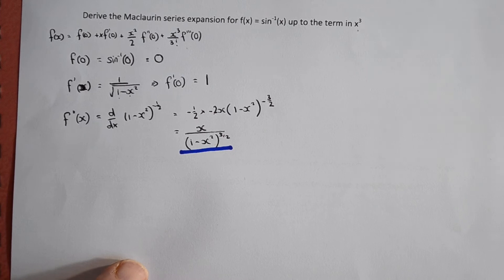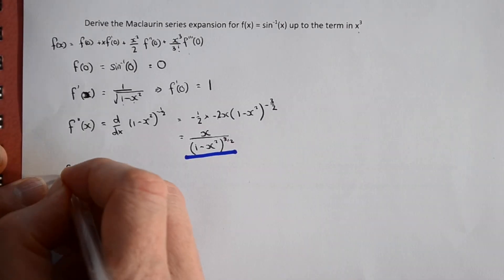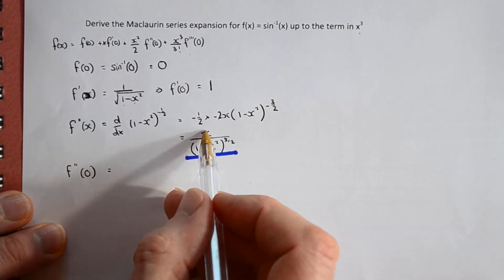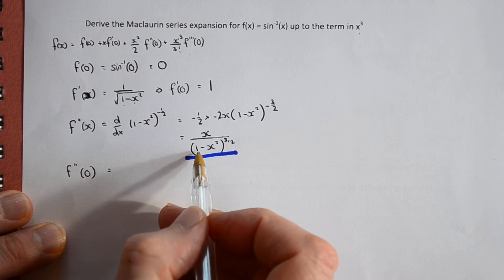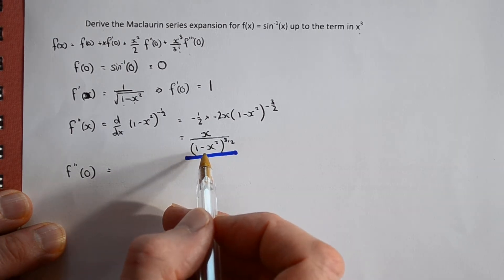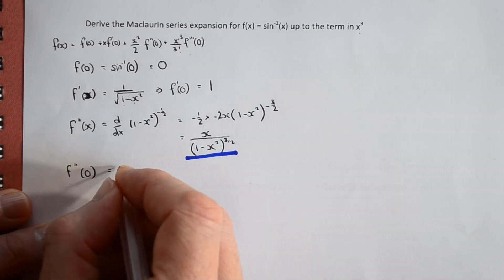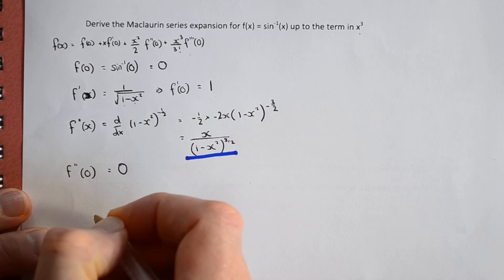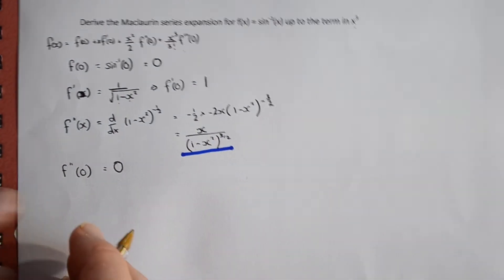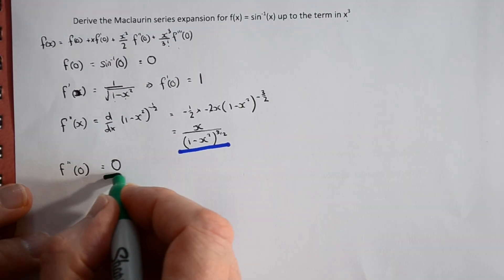Now for f''(0): substituting zero in, the denominator will be 1 — so that's fine, a finite value — but the numerator will be zero. So the second derivative at zero is zero. The values we're after so far are zero, one, and zero.